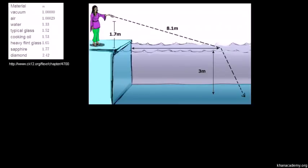Let's do a slightly more involved Snell's Law example. There's a person sitting at the edge of a pool with a laser pointer in their hand. They shine the laser pointer from 1.7 meters above the surface of the pool, and it travels 8.1 meters to touch the surface of the water. The pool is 3 meters deep. We want to figure out how far from the edge the laser hits the bottom of the pool.